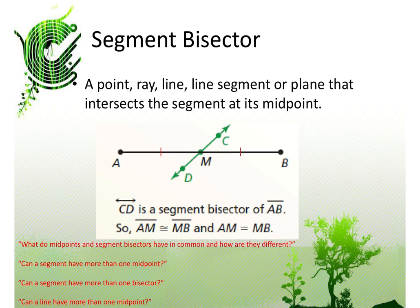A point, ray, line, line segment, or plane that intersects a segment at its midpoint is called a segment bisector. You need to highlight the word bisector. All it means is that it cuts the segment in half.